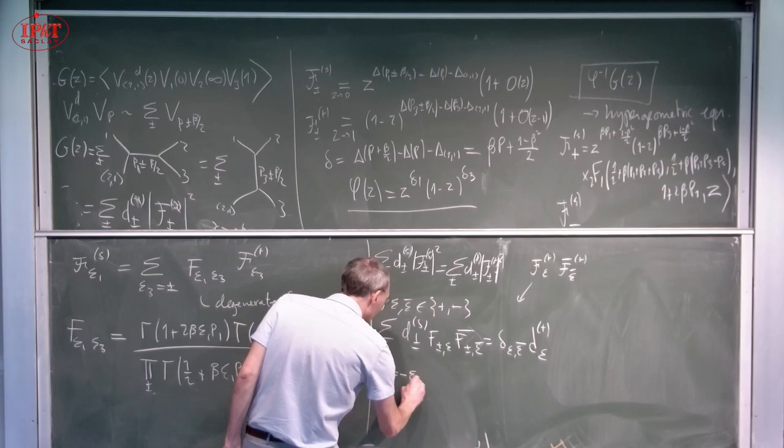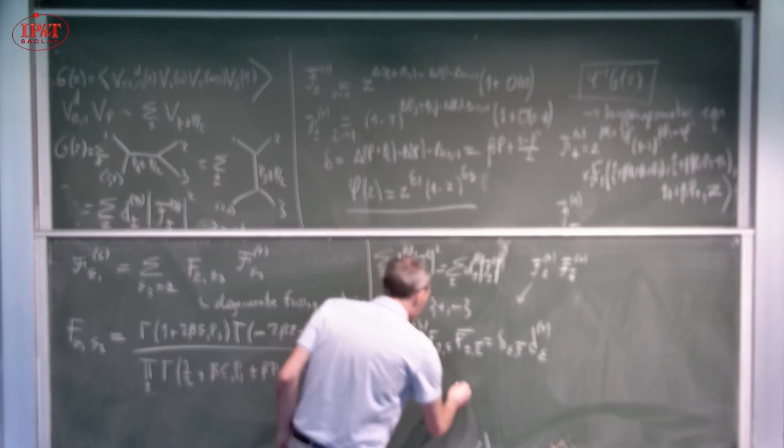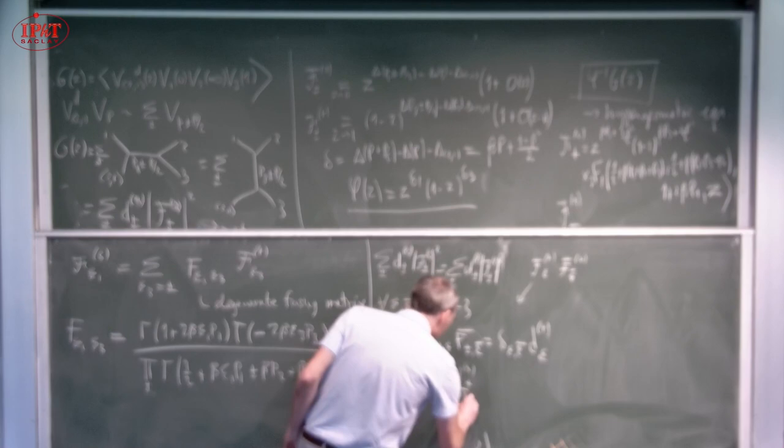Look at the two equations with epsilon equals minus epsilon bar. So if epsilon equals minus epsilon bar, the right hand side is zero and therefore you get equations for just d plus minus s. So you get two different values of ds plus over ds minus.